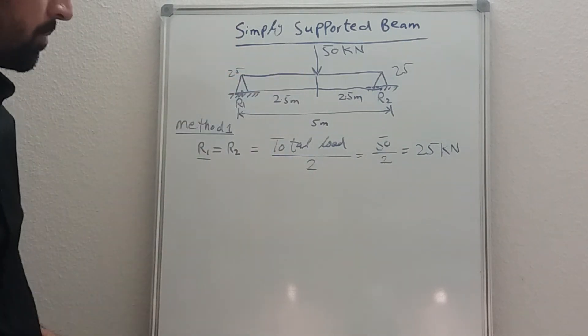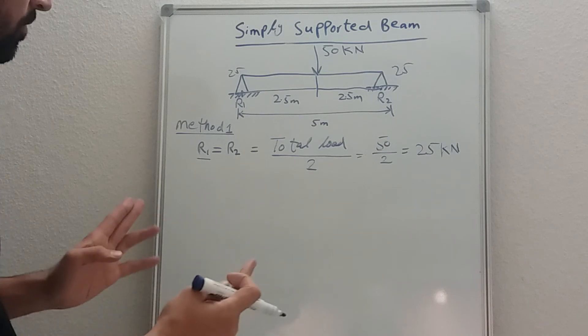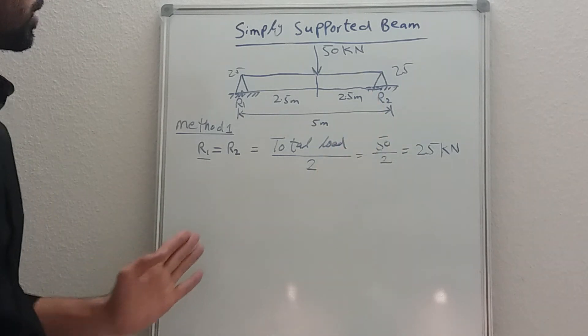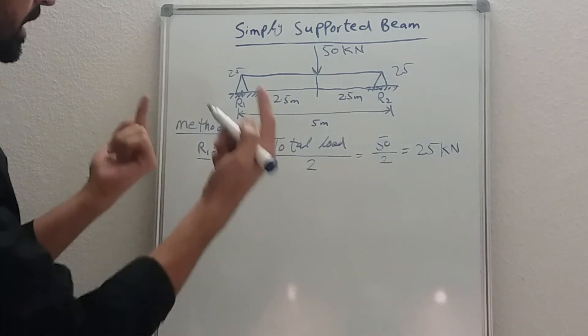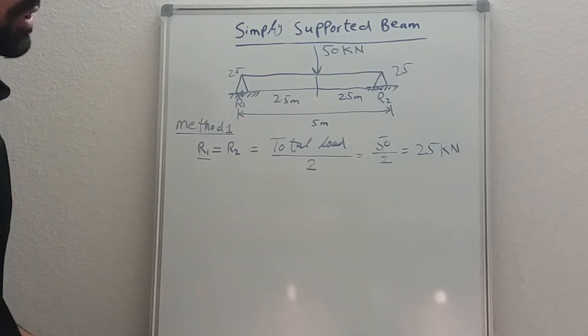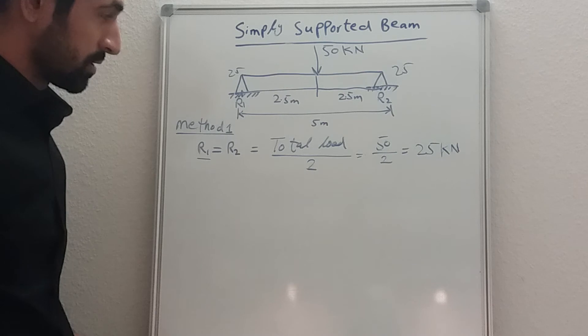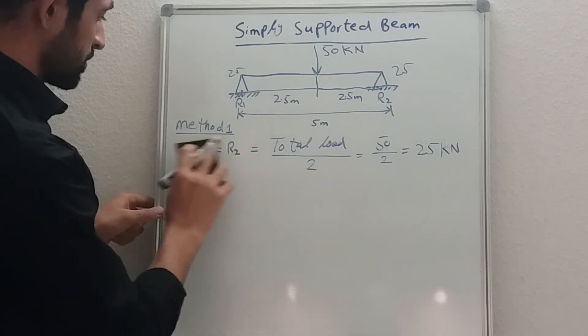R1 is 25 kilonewton, R2 is also 25 kilonewton. So it means 50 kilonewton acting downward in the middle of the beam, and 25 from right side and 25 from left side is acting upward to support this 50 kilonewton which is heading downward. So this is the first method.